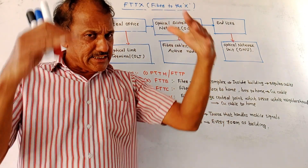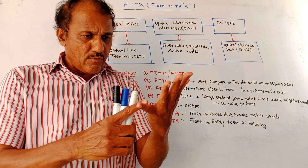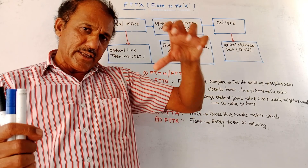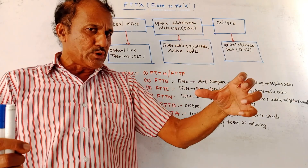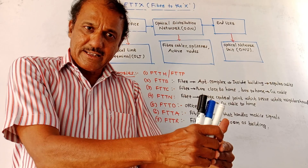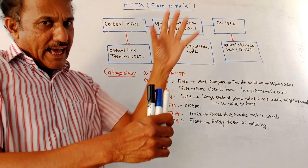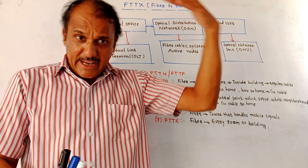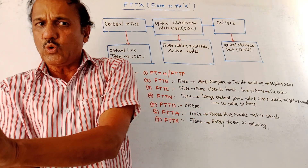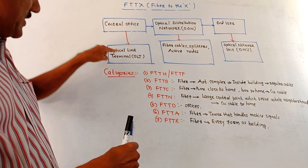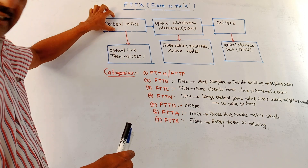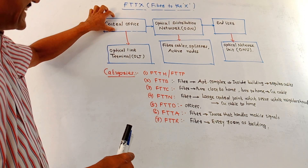The central office consists of the Optical Line Terminal, or OLT. As the name indicates, it is a terminal. When transmitting a signal through the fiber optic cable, the input signal is electrical and needs to be converted into an optical signal — OLT handles this. At the receiver end, the optical signal must be converted back into an electrical signal. This functioning is done by the OLT in the central office.